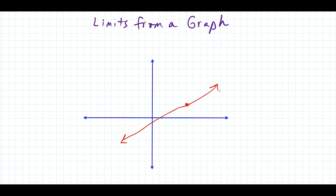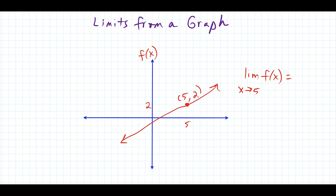So let's say we focus in on this point here — this is the point where we have x equals 5 and we're going up 2 units. If I wanted to find the limit as x approaches 5, and this is a graph of f of x, all I have to do is just identify the y value. When your graph is completely connected, finding the limit is as easy as identifying the y value. The y value at x equals 5 is 2, so that would be our limit.